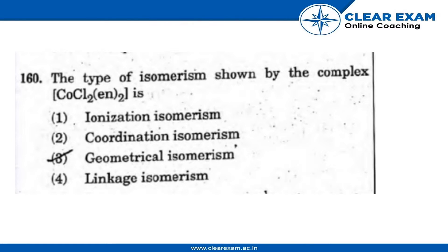The next question: the type of isomerism shown by the complex [CoCl₂(en)₂] is — ionization, coordination, or geometrical linkage? The correct answer is geometrical isomerism.